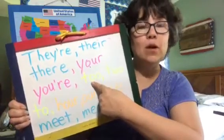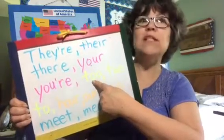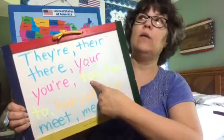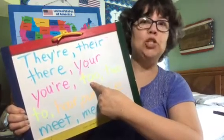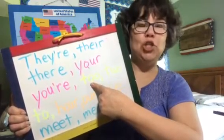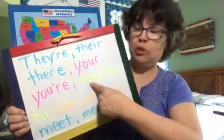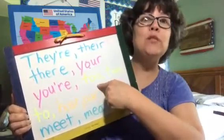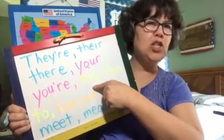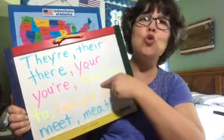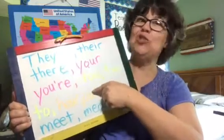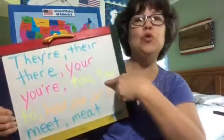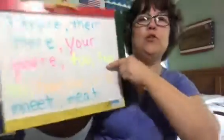Too can mean also, I want to go too, or it can mean too much — you have way too much. I remember that because there are two o's, so it's just too many o's — too much. And then two is the number two.